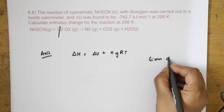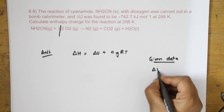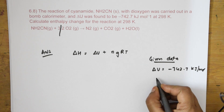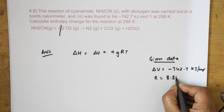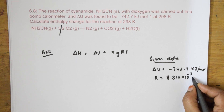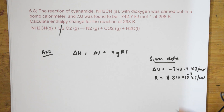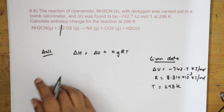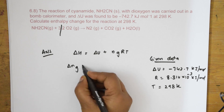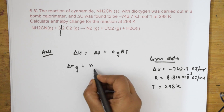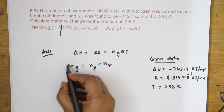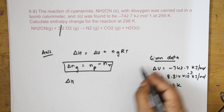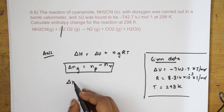Given data: ΔU = −742.7 kJ/mol; R = 8.314 × 10⁻³ kJ/mol; T = 298 K. The formula for Δng is: Δng = moles of gaseous products − moles of gaseous reactants, i.e., np − nr.